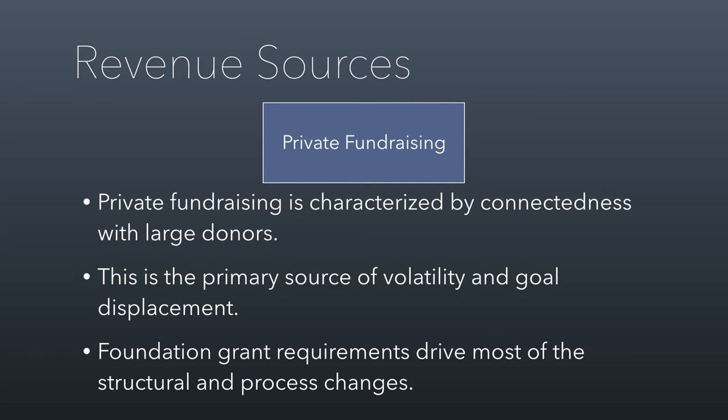The other problem with private fundraising is there's a lot of goal displacement. Nonprofit managers have decided this is the cause they want to pursue — say, helping youth in Utah County. You might pitch to a large donor who says, 'I like what you're doing, but I'd rather you help youth in Emory County. And I have $5 million to help you do it.' That creates instant goal displacement. The nonprofit managers wonder if they could operate in Emory County, and with $5 million available, they decide to go do it. Now the goals of the nonprofit have shifted dramatically to respond to the interests of the donor.